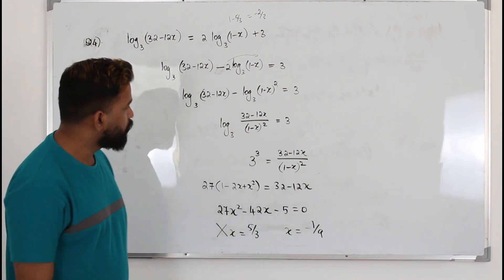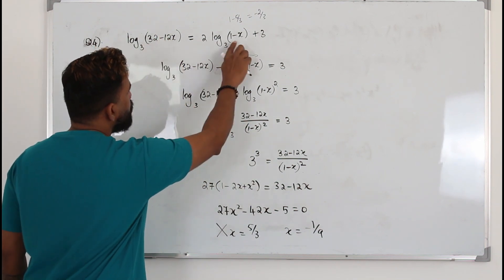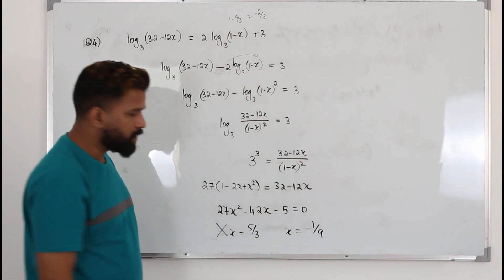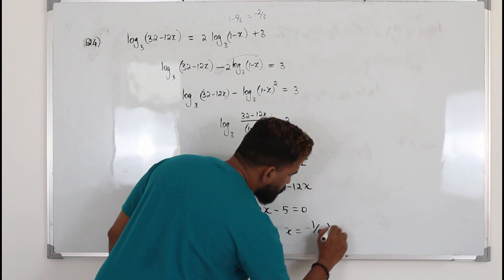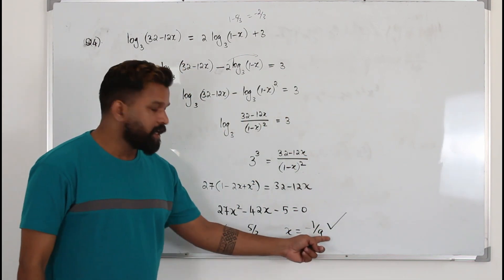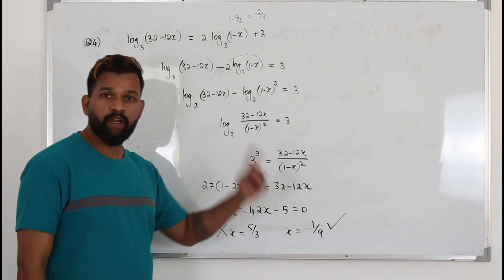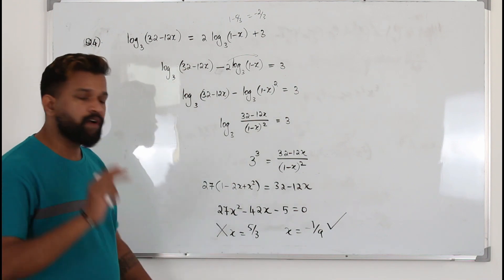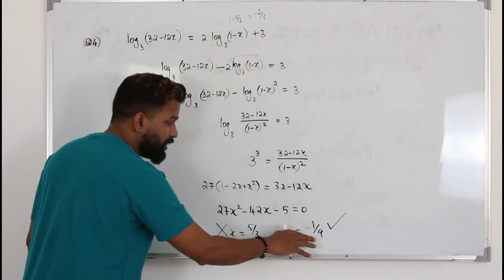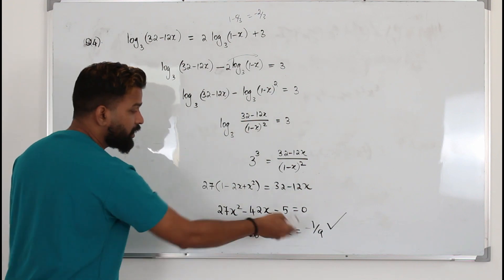Now substitute the second value, x = negative 1 over 9. When you substitute here, 32 plus 12 times 9 gives a positive number, and 1 minus of this number — so 1 plus — both are positive. So this is a valid solution. You can put a cross on 5/3 and a tick on negative 1/9, and you will be given full marks. If you don't verify and just put two values, you are going to lose one mark.